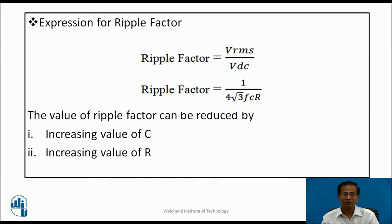Expression for ripple factor: the ripple factor represents the amount of ripples present in the output, expressed as VRMS / Vdc. Substituting the value of VRMS, the ripple factor equals 1 / (4√3 × F × C × R). The ripple factor depends on C and R, and reduces by increasing the values of C and R.